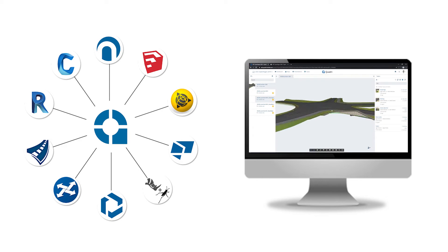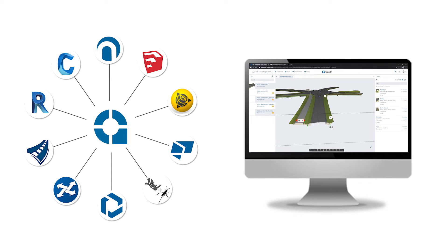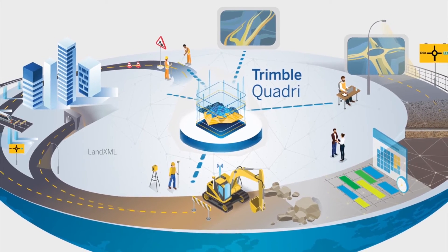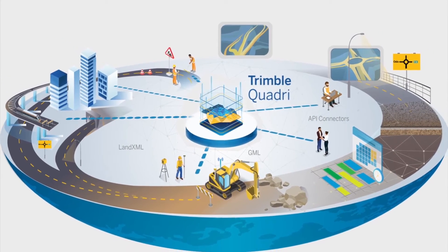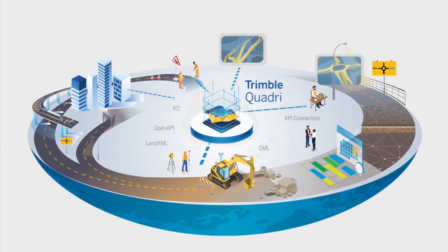Quadri is a BIM collaboration tool for civil infrastructure projects. It allows real-time collaboration in a central model where you keep track of changes and access the model from anywhere, at any time, and in any project using your favorite design tool. With Quadri, you are in a multi-user and model environment where you can collaborate seamlessly across companies, domains, and geographical locations.